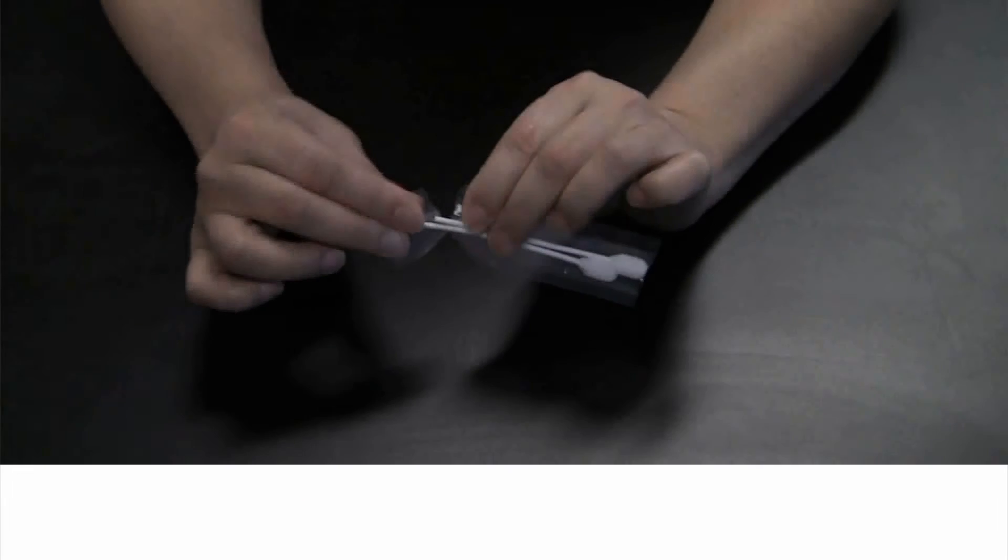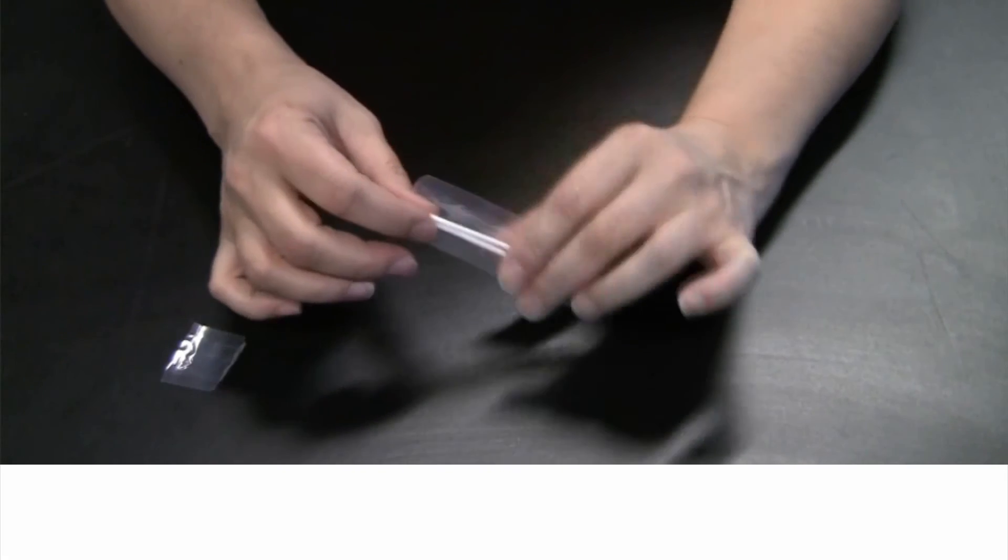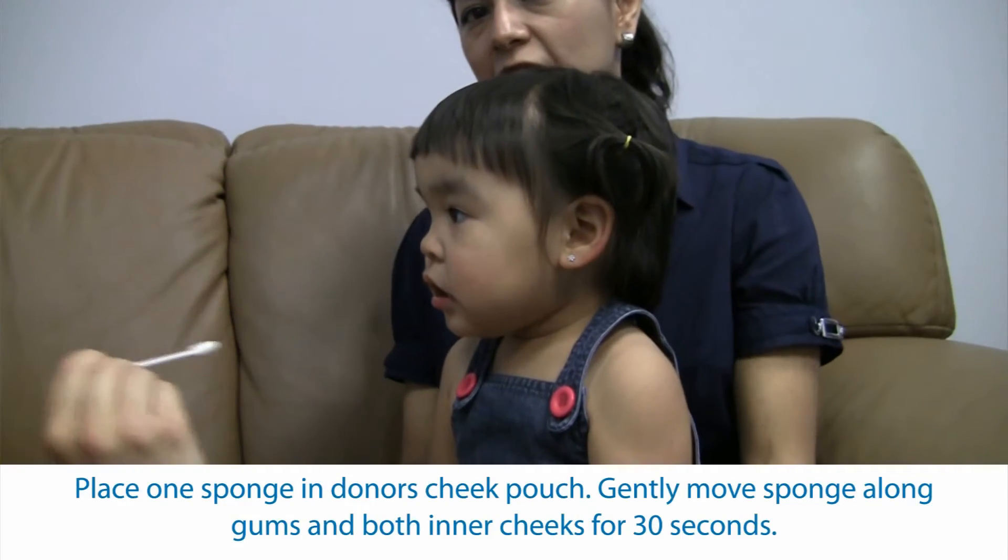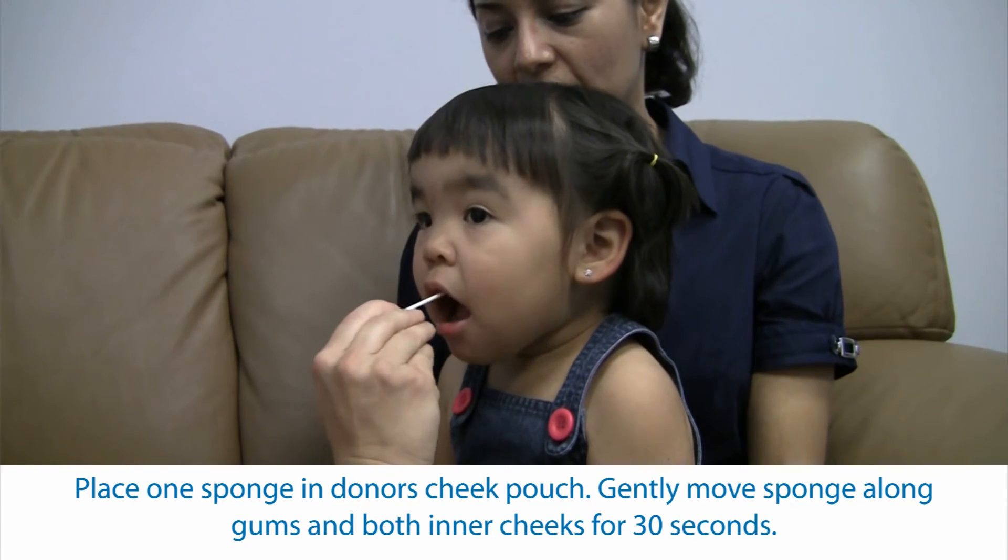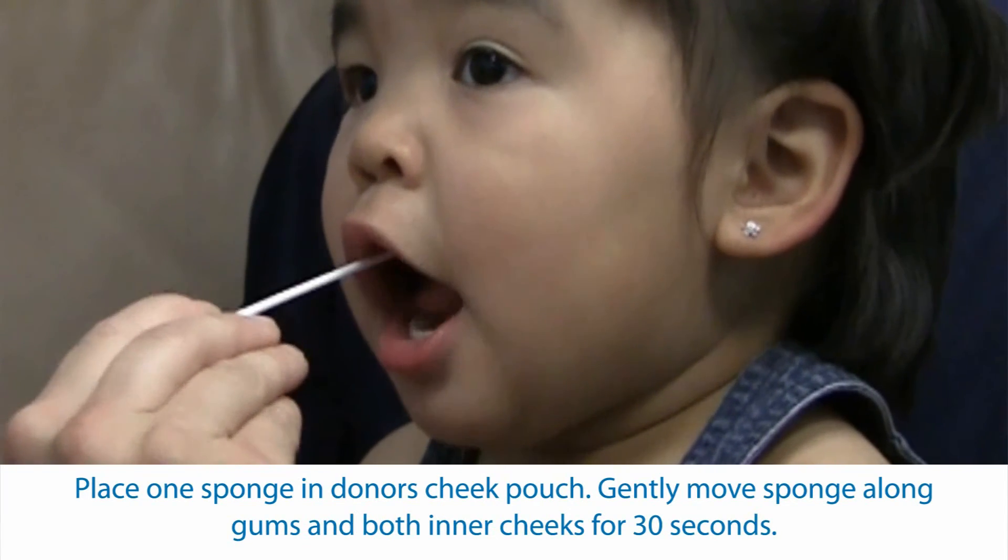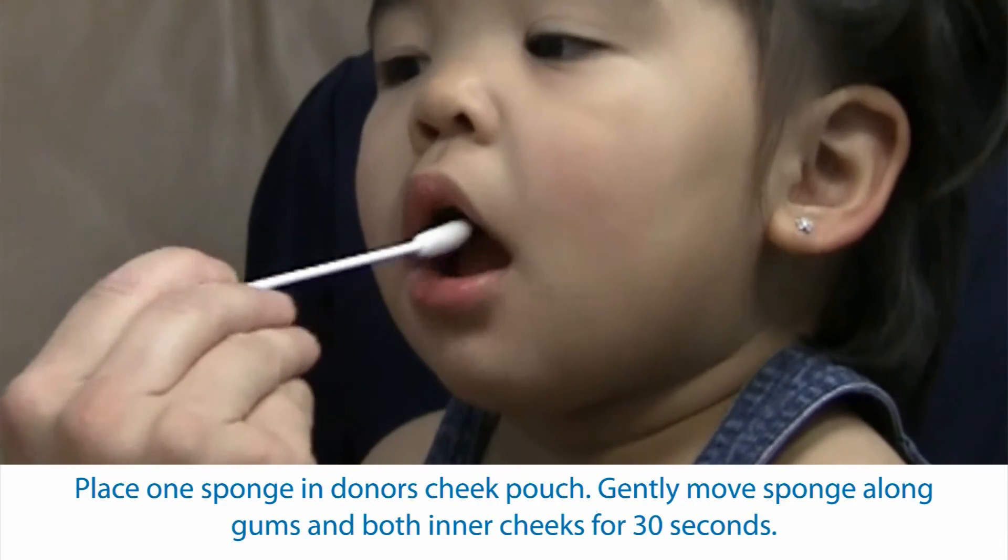To begin, tear open the bag containing the sponges at the notch and remove one sponge. Place one sponge in the donor's cheek pouch. Gently move the sponge along the gums and inner cheeks on both sides of the mouth for 30 seconds to soak up as much saliva as possible.